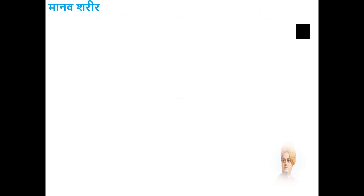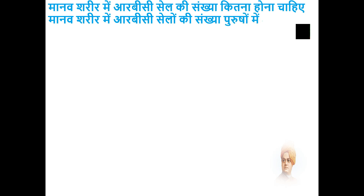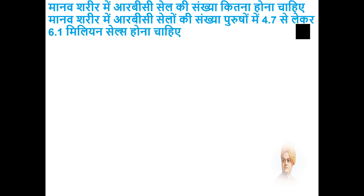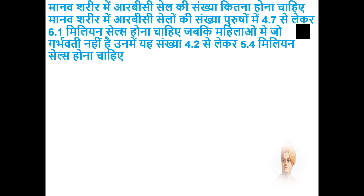मानव शरीर में RBC सेल की संख्या कितनी होनी चाहिए? मानव शरीर में RBC सेलों की संख्या पुरुषों में 4.7 से लेकर 6.1 मिलियन सेल्स होनी चाहिए, जबकि महिलाओं में जो गर्भवती नहीं हैं, उनमें यह संख्या 4.2 से लेकर 5.4 मिलियन सेल्स होनी चाहिए।